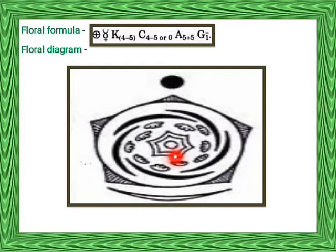The third whorl indicates the stamens — present in 10 numbers arranged into 2 bundles or 2 series of 5 plus 5. The outer series is opposite to the petals and the inner series is opposite to the sepals. The central portion is the monocarpellary ovary.